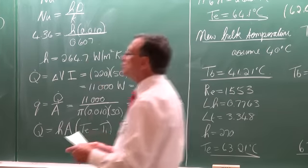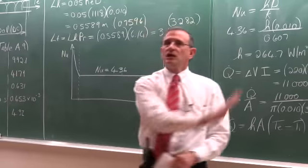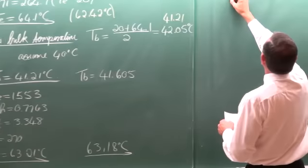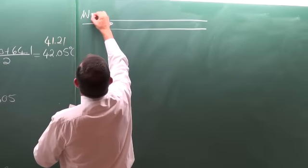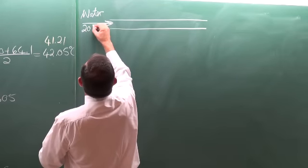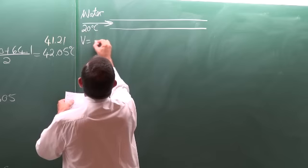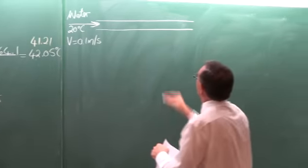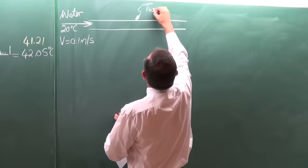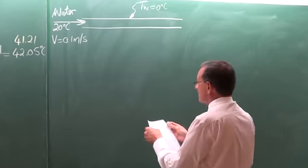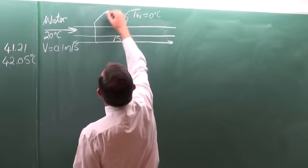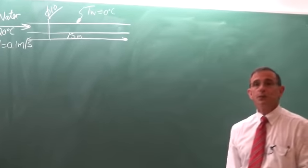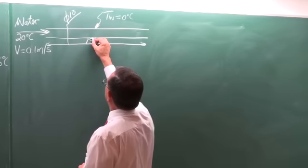Let's do another problem. The first one was a constant heat flux problem; let's now look at a constant wall temperature problem. Again the same tube with water, inlet temperature 20 degrees Celsius, inlet velocity 0.1 meters per second average velocity. The wall temperature is kept constant at 0 degrees Celsius, and the length in this case is 15 meters — the same 10 millimeter tube, but I reduced the length to 15 meters. You will see later why.